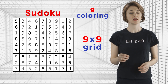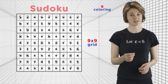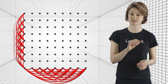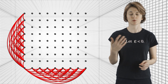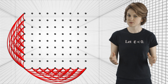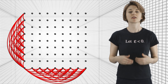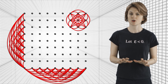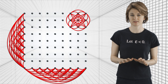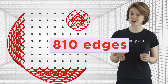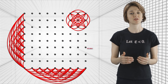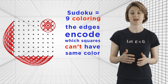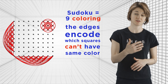Let's make it into a graph. Each of the 81 squares is a vertex. Connect every vertex that's in the same row by an edge, and connect every vertex that's in the same column. We're only showing it for one row and one column because the graph would be too visually complicated if we put them all in. Then we connect all the vertices which are in the same three by three square — again, only showing it on one of the nine blocks. If we showed all the edges, there'd be 810 of them. Now, a nine coloring of this graph is the same as a Sudoku. The edges encode which squares cannot have the same color, or number in the Sudoku case.